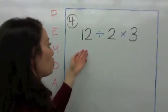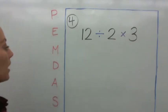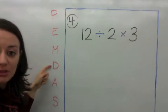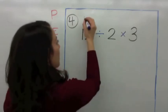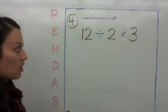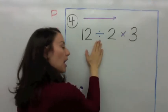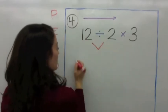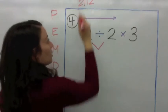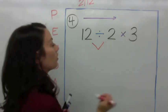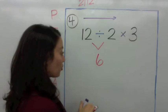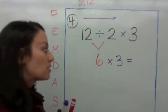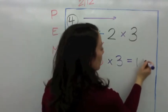Example 4 says 12 divided by 2 times 3. Remember the order of operations has M before D, but this is always from left to right. So start with the division on the left first: 12 divided by 2. How many times can you skip count by 2 to get to 12? It's 6. Then bring down the multiplication: 6 times 3. Six times 3 is 18, so the answer is 18.